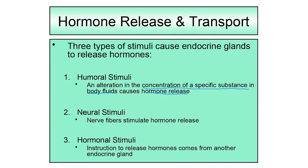The last type of stimuli is actually the most common. Most endocrine organs respond to hormonal stimuli and release their hormones when they receive that stimulus. This basically occurs when one hormone released by a different endocrine gland travels to another endocrine gland and tells it to release its hormone. In our next section on the endocrine system, we're going to look at a lot of this because the hypothalamus and the pituitary work a lot through hormonal stimuli.